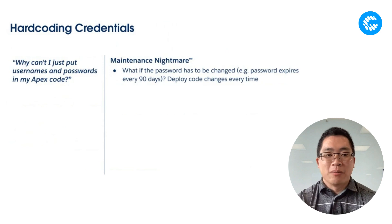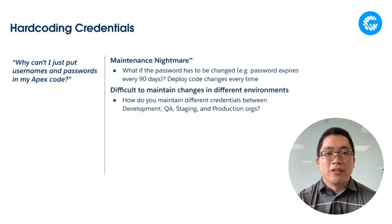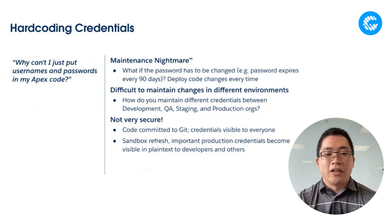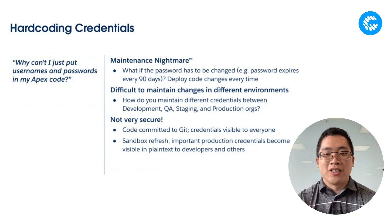It can be really difficult to maintain changes between different environments when you have different credentials for development, testing, and production. You really want an admin to be able to do that as simply and straightforwardly as possible. It's also not really secure — any code committed to your Git repository may make credentials visible to other members of your team, developers, external consultants. When you do sandbox refreshes, you want to make sure production credentials don't become available to others, or worse, you end up with a non-production system connecting to your production ERP or back-end financial systems. That can be a recipe for disaster.